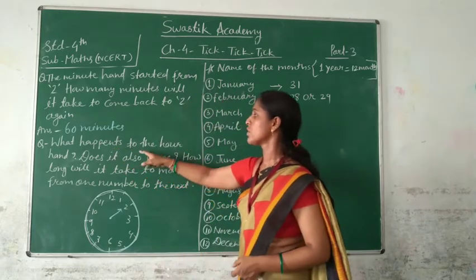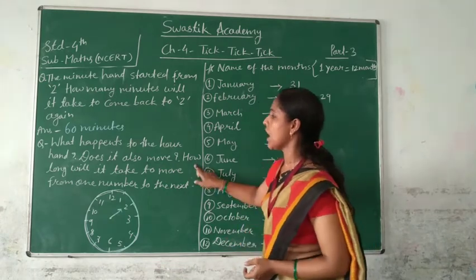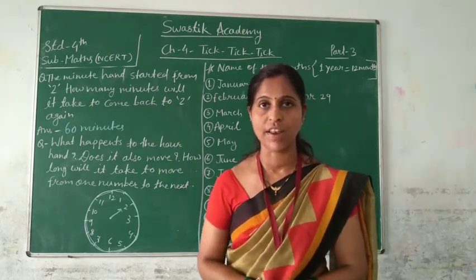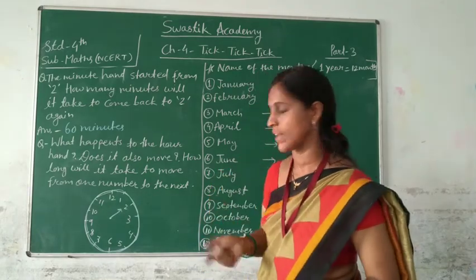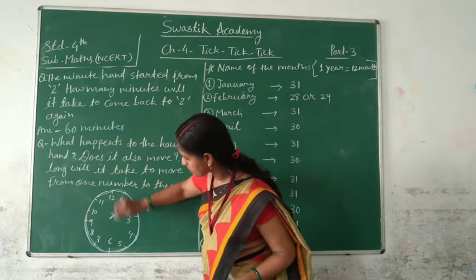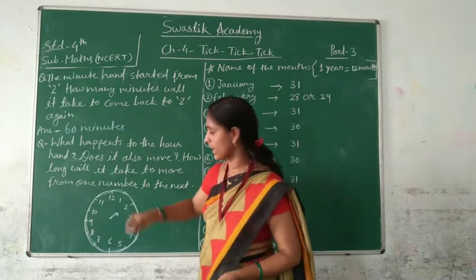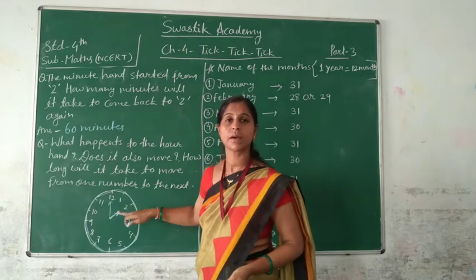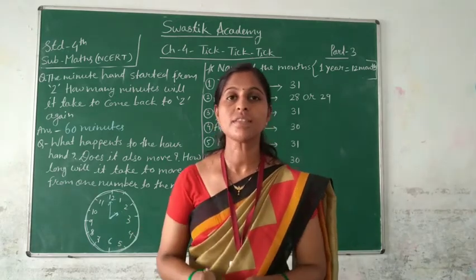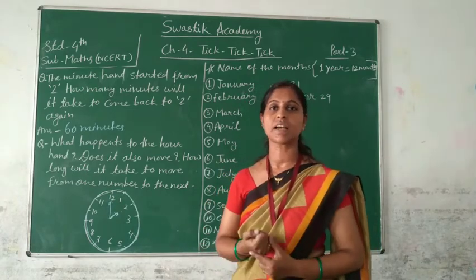What happens to the hour hand? Does it also move? If the hour hand moves, how far does it move in one hour? Here we have a question about the hour hand and the short hand. How much time does it take to move from one number to the next number? Our short hand is at 2, and the next number is 3. The minute hand completes one full round, and then our short hand moves one number forward.